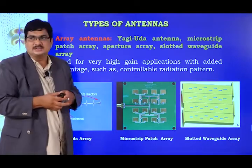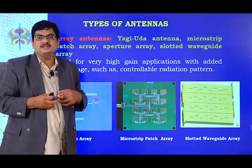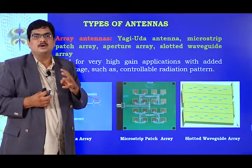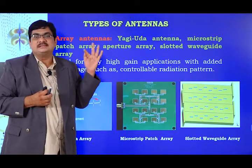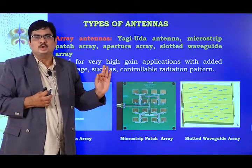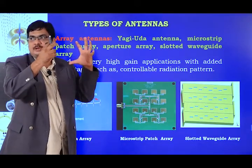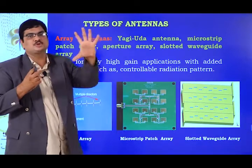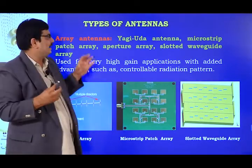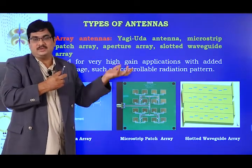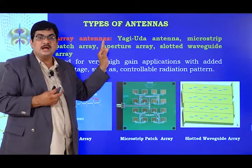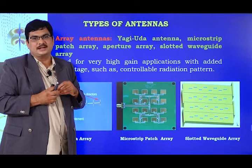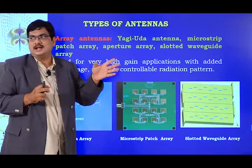Next are reflector antennas. In a reflector antenna, there are two antennas: a primary antenna and a secondary antenna. The reflector is always the secondary antenna — it is a passive element. An active antenna is placed before it, and whatever radiation comes from the active antenna is reflected back to the receiver. Lens antennas work on the same principle, but a dielectric lens is used instead of a reflector.